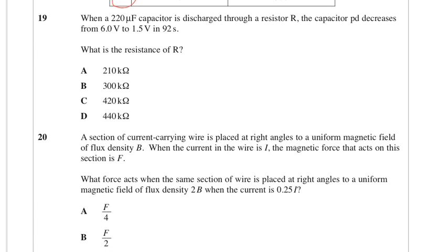When a 220 microfarad capacitor is discharged through resistor R, the capacitor PD decreases from 6.0 to 1.5 in 92 seconds. What is the resistance of R?